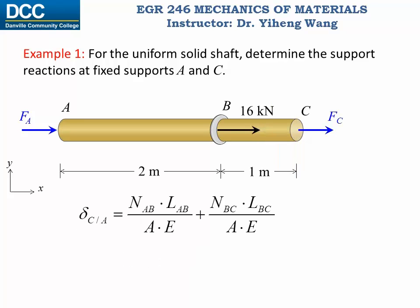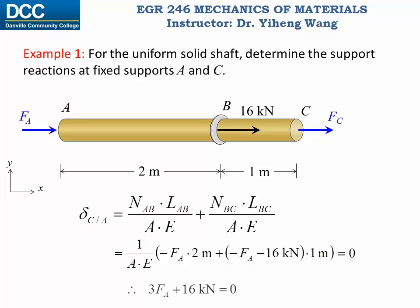Going back to the displacement equation: now we know NAB equals negative FA and NBC equals negative FA minus 16 kN. Since A and E are constants, filling in this information and setting the total displacement to zero, we get our second equation: 3FA plus 16 kN equals zero.